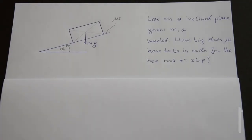The given quantities are the mass m of the box and the angle alpha, which is the angle by which the plane is tilted from horizontal. Now the question at hand is how big does μs at least have to be in order for the box not to slip?